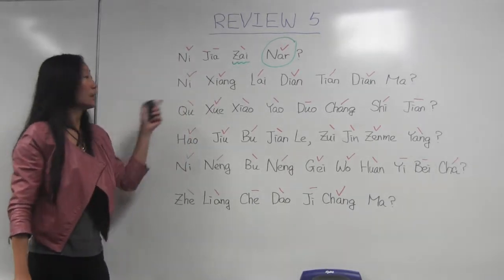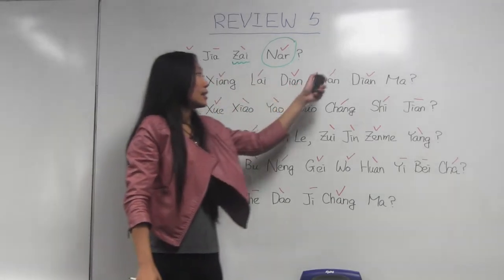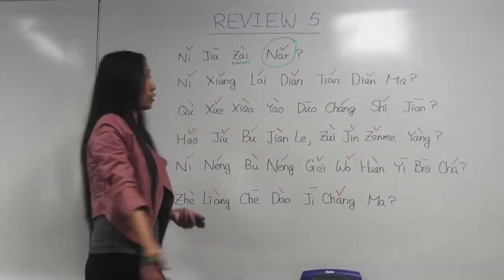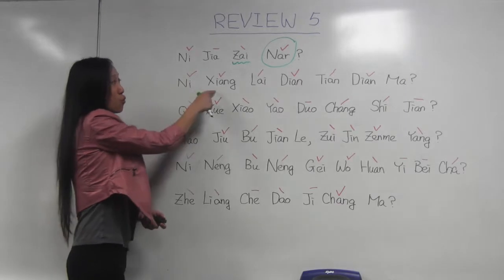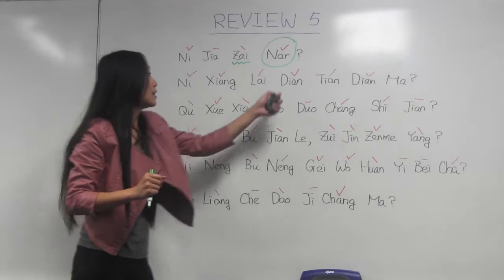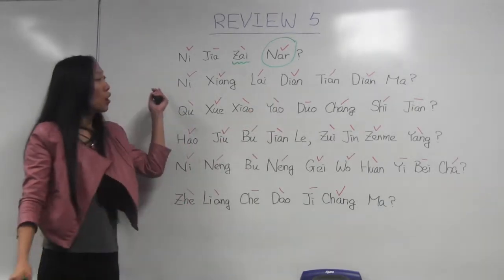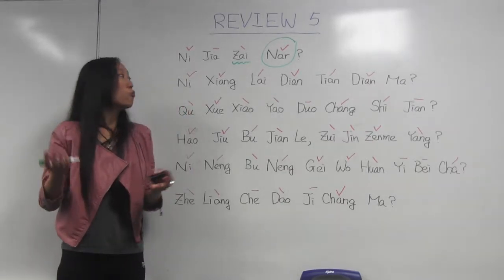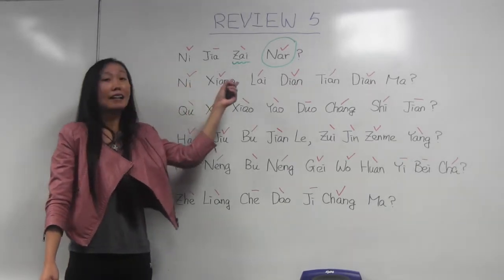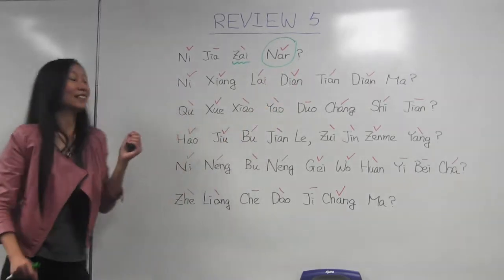The second one: 你想来点甜点吗? 甜点 means dessert. 点 means a little bit, just a few. So all together: do you want to have some dessert? 你想来点甜点吗?